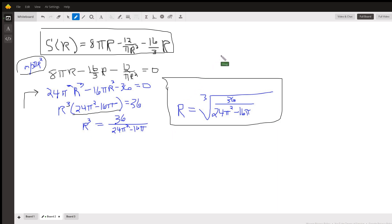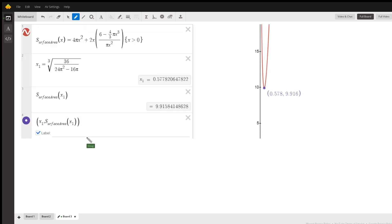That is the radius that minimizes the surface area. Pretty ugly.